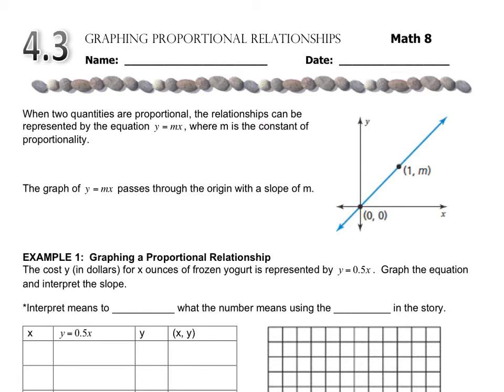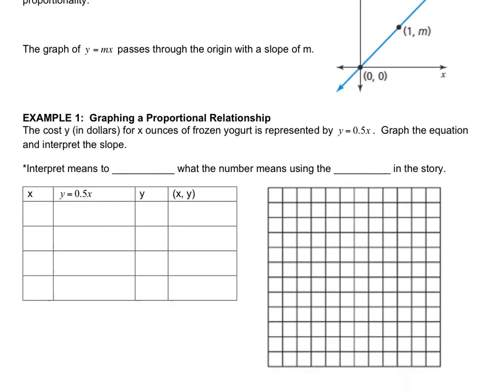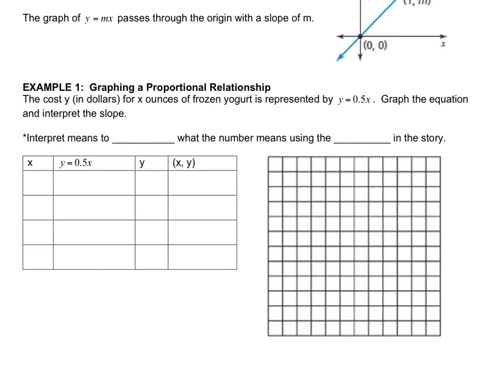Let's scroll down and look at example one. We're going to graph a proportional relationship. The cost y in dollars for x ounces of frozen yogurt is represented by y equals 0.5x. We have to graph the equation and interpret the slope.